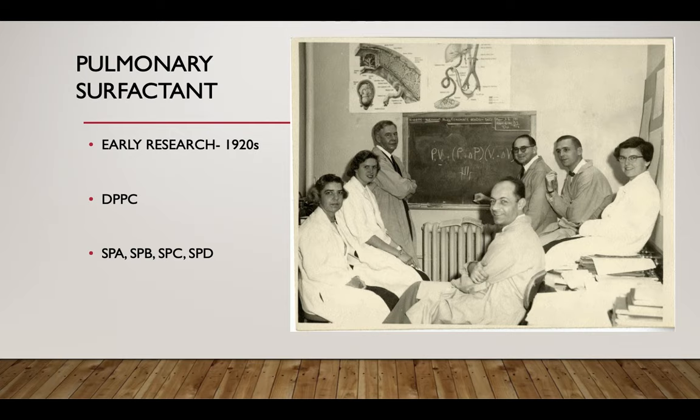Pulmonary surfactant coats the smallest bronchioles and alveoli. It is made of a mixture of proteins and phospholipids, and an incredibly minute amount of carbohydrates. Technically speaking, it is composed of a film of dipalmitoyl phosphatidylcholine, also known as DPPC, which is a type of phospholipid. Other parts of surfactant are lipids called triglycerides and phosphatidylglycerol, also called PG.